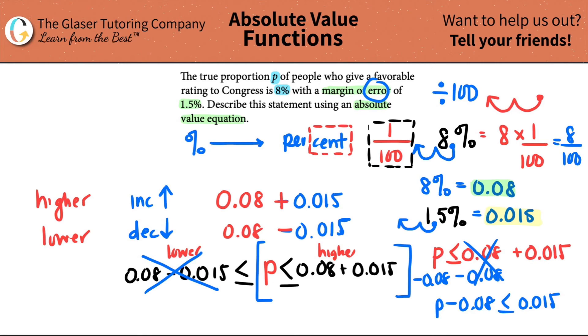And now all we have to do, because technically we still have to include the lower limit. So if I strip this away, I have to put the absolute value sign and this is the end. This is your answer. So it's P, that true proportion minus 0.08, that's the percentage for Congress is just at that margin of error. It's less than or equal to 0.015. And that is your answer.